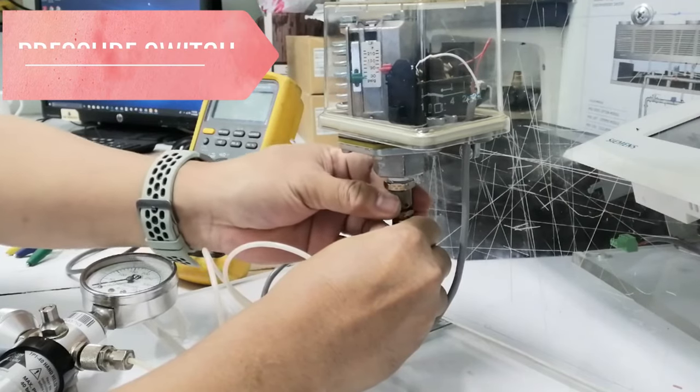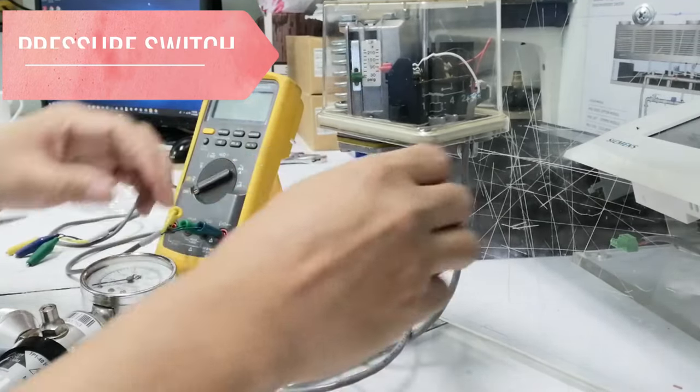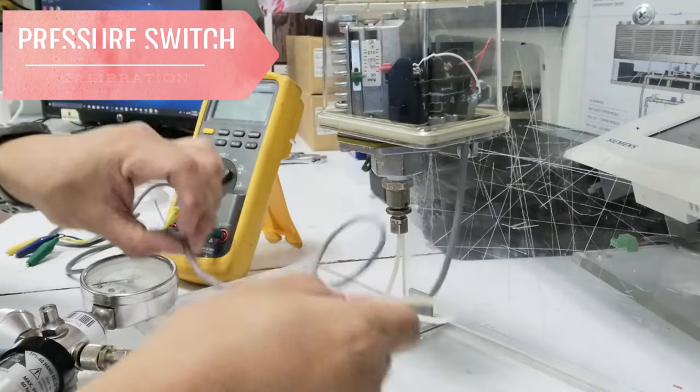The pressure of the monitored medium operates against a flat diaphragm, bellows, or a plunger, depending on pressure range.